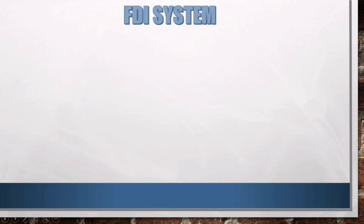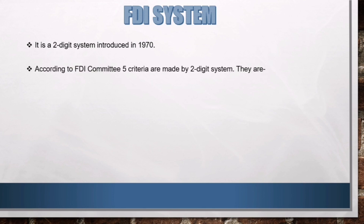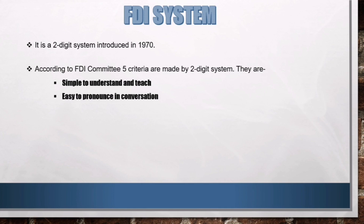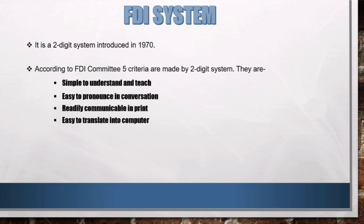Now let's know about the FDI system. Since the other two systems did not comply with the requirements set by FDI, the organization introduced its own two-digit system in 1970. According to the FDI committee, five criteria are met by this system: first, it should be simple to understand and teach; second, it should be easy to pronounce in conversation; third, it should be readily communicable in print; fourth, it should be easy to translate into computer; and fifth, it should be easily adapted to standard charts used in general practice.